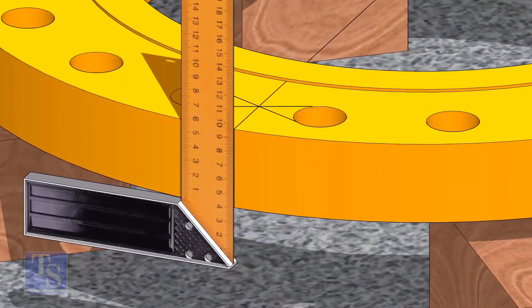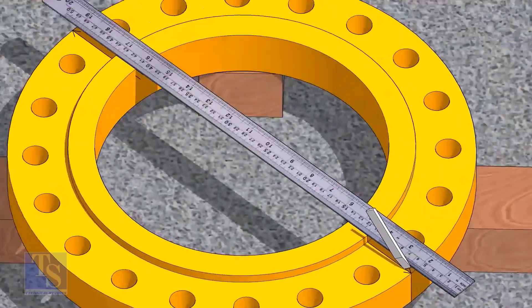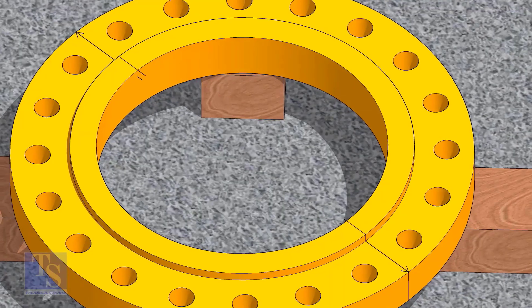Transfer the center line to the sides of the flange. Overturn the flange and transfer the center line on the back side of the flange.